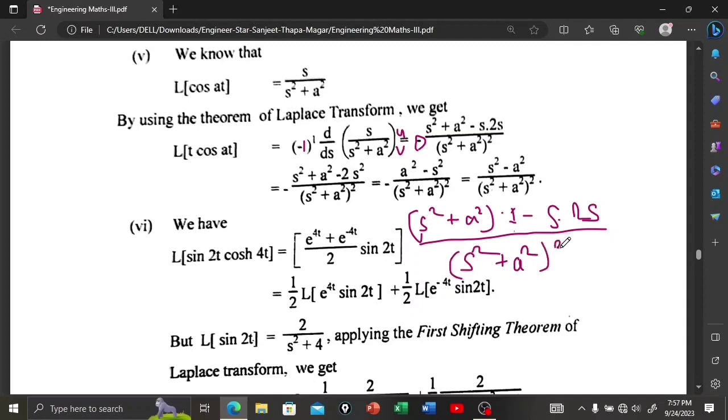Now with the negative sign, it will be s² minus 2s². That is minus s². And minus times minus is plus, so that is s² plus a² with minus sign.